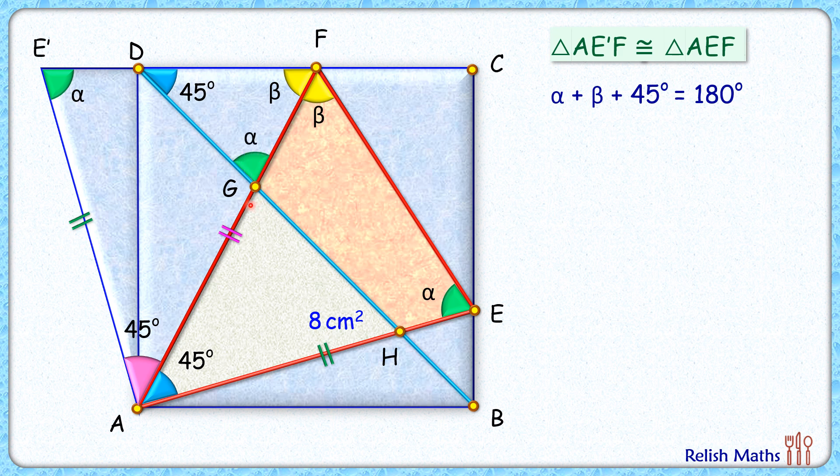These are vertically opposite, so this angle will be alpha degrees. Now in triangle AGH and this bigger triangle AEF, we have got two angles 45 degrees and alpha, and 45 degrees and alpha. Thus by angle-angle similarity, these two triangles are similar to each other. When two triangles are similar, the ratio of their areas equals the square of the ratio of their sides or square of the ratio of their heights or altitudes.